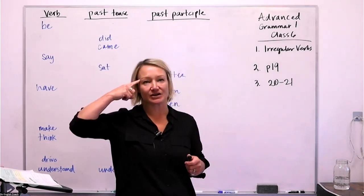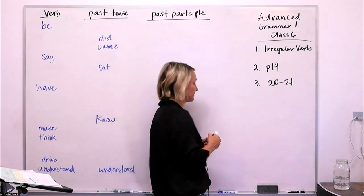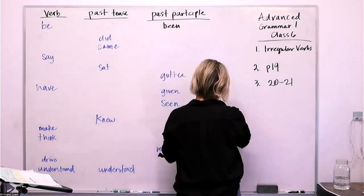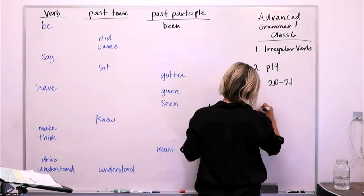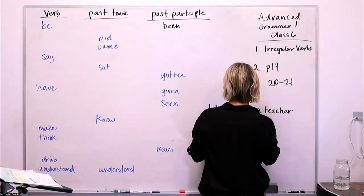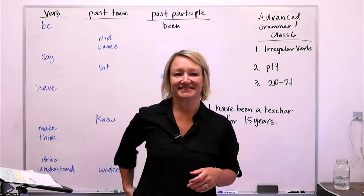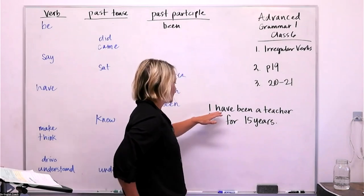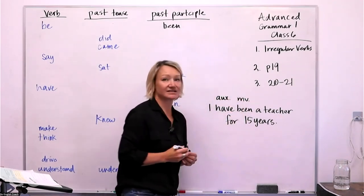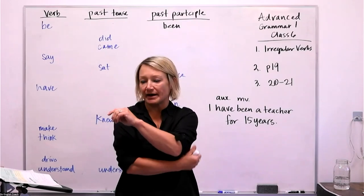I sometimes need to put a verb into a sentence in my mind to know what sounds right. For example, the participle for 'be' is 'been.' So the example is: 'I have been a teacher for 15 years.' You've got an auxiliary, your main verb participle, and then this auxiliary. We use this tense a lot, and next week we'll get into working with it more.